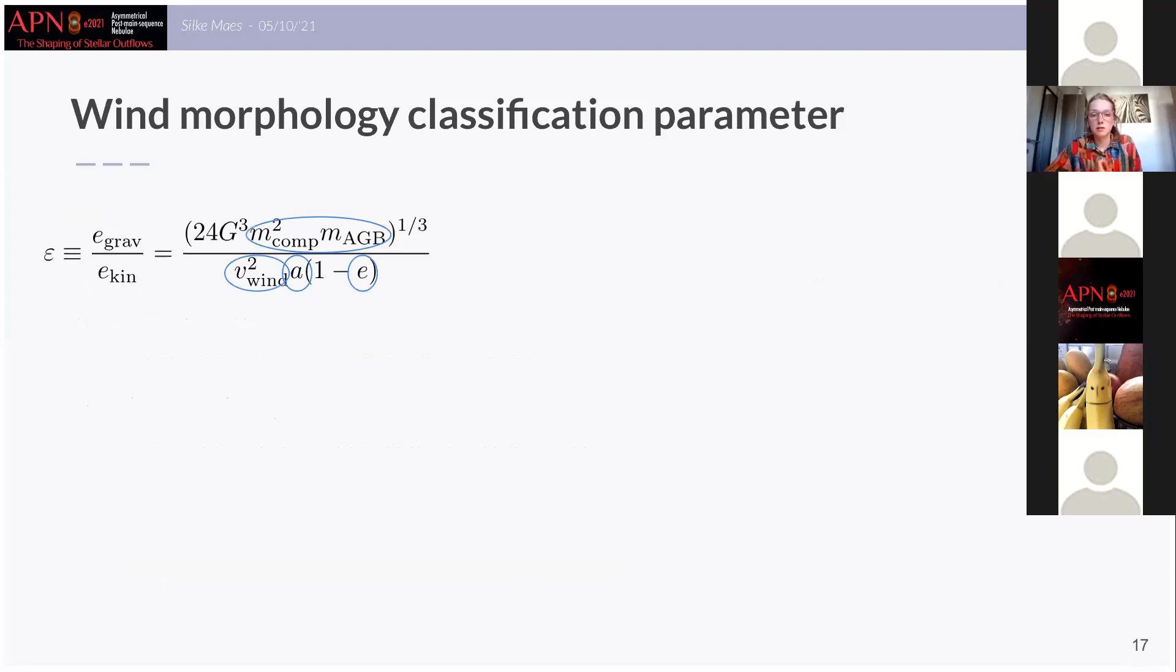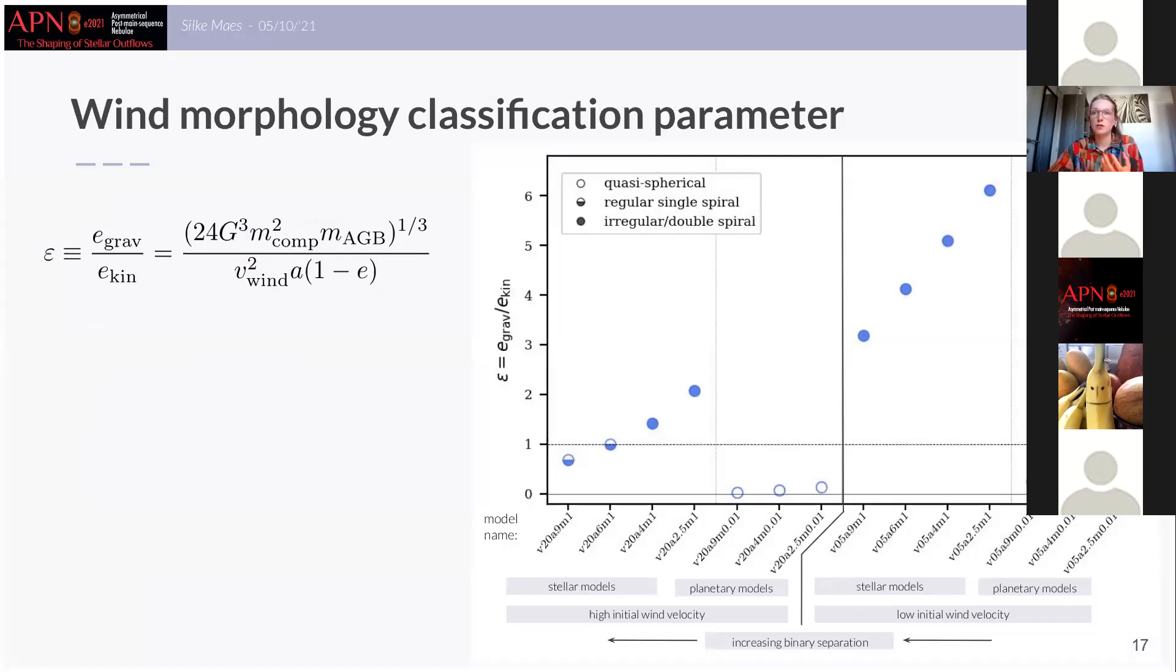So this means it contains the wind velocity, the binary properties and also the two masses of the components. In this graph I show you our 14 models on the x-axis and on the y-axis you can see its calculated epsilon value. So the fill style of the different symbols indicates the type of morphologies that we found in simulations. We see that for low values of epsilon this corresponds to the quasi-spherical morphologies, models with a value of epsilon around one exhibit a simple and single spiral, and then we find that the larger values for epsilon correspond to the complex and more perturbed simulations.